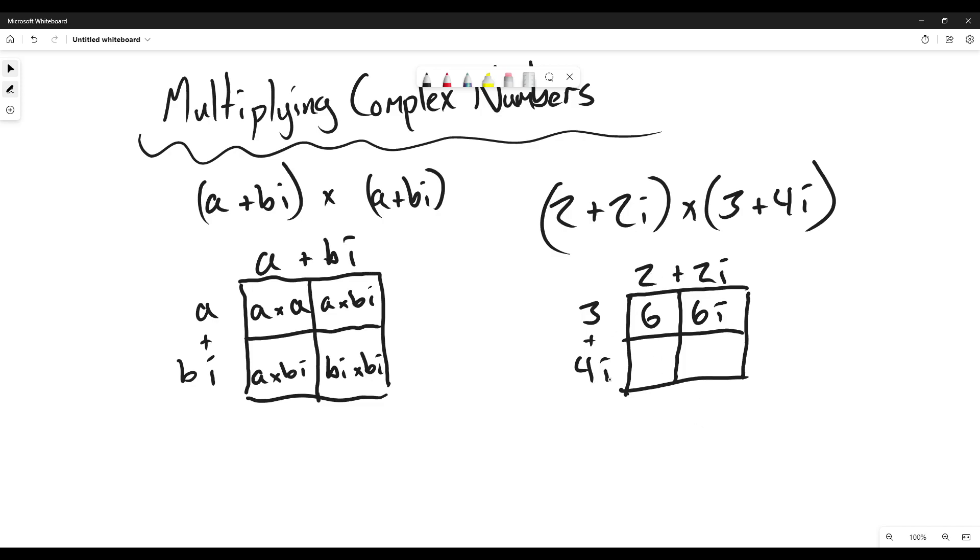2 times 4i which is 8i, and 2i times 4i. Now this might be where it gets a little tricky. So we have 2 times 4 which is 8, but then we have i times i. Now if you remember, i equals the square root of negative 1.